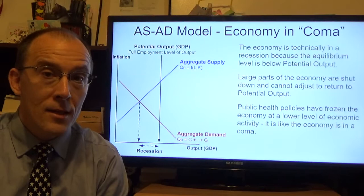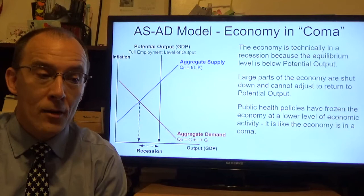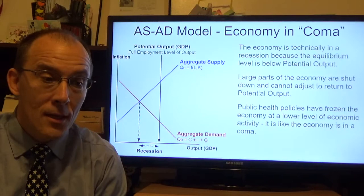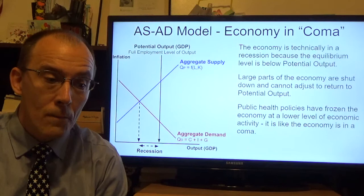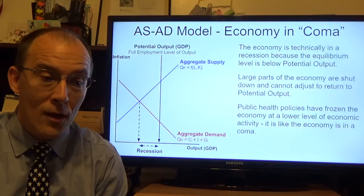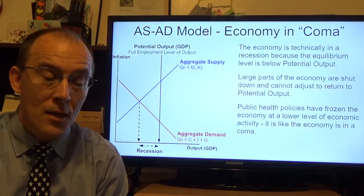Normally, in a recession the economy would recover. Adjustments in wages, prices, and business structure would allow the economy to move back out to potential output and general equilibrium. Unfortunately, all of that has been frozen in place — those adjustments cannot happen because of the public health emergency. So we're in a recession and we're locked there. As a point of judgment, this is probably essentially a good thing, as we do want workers to stay home to help get through this public health emergency.